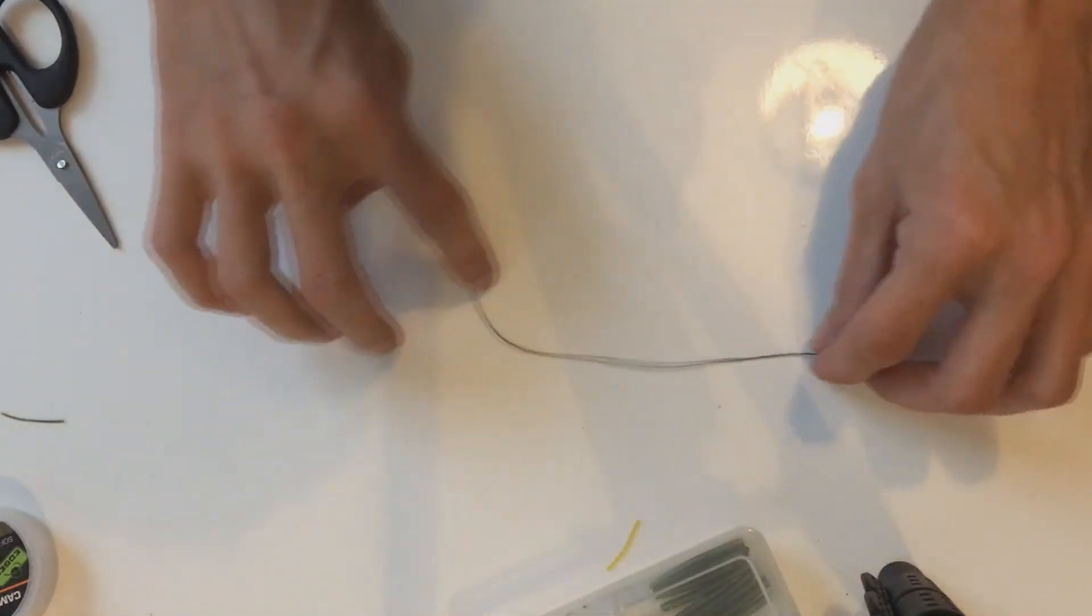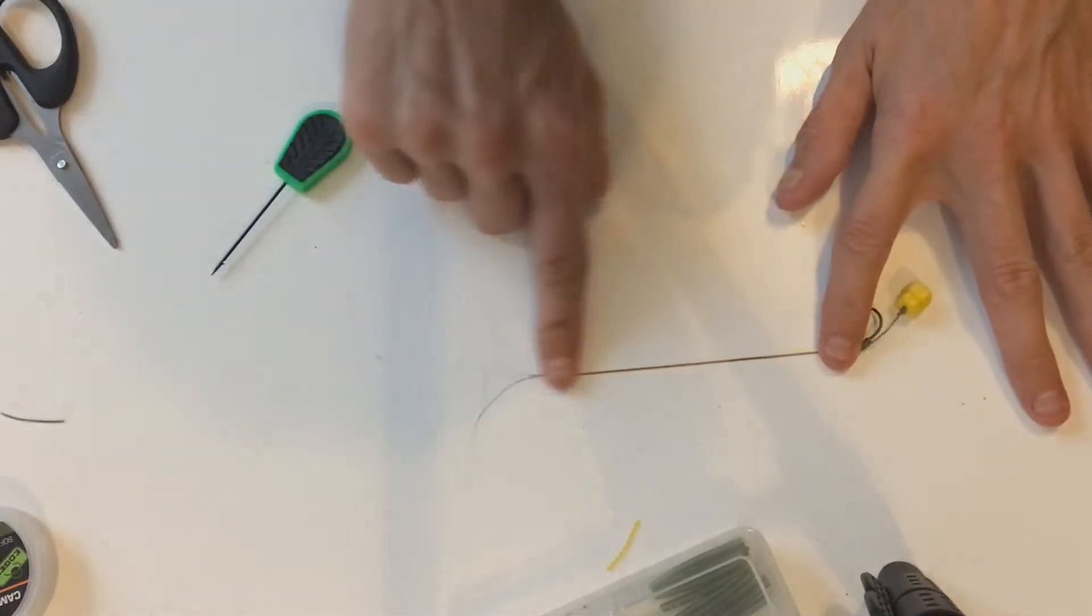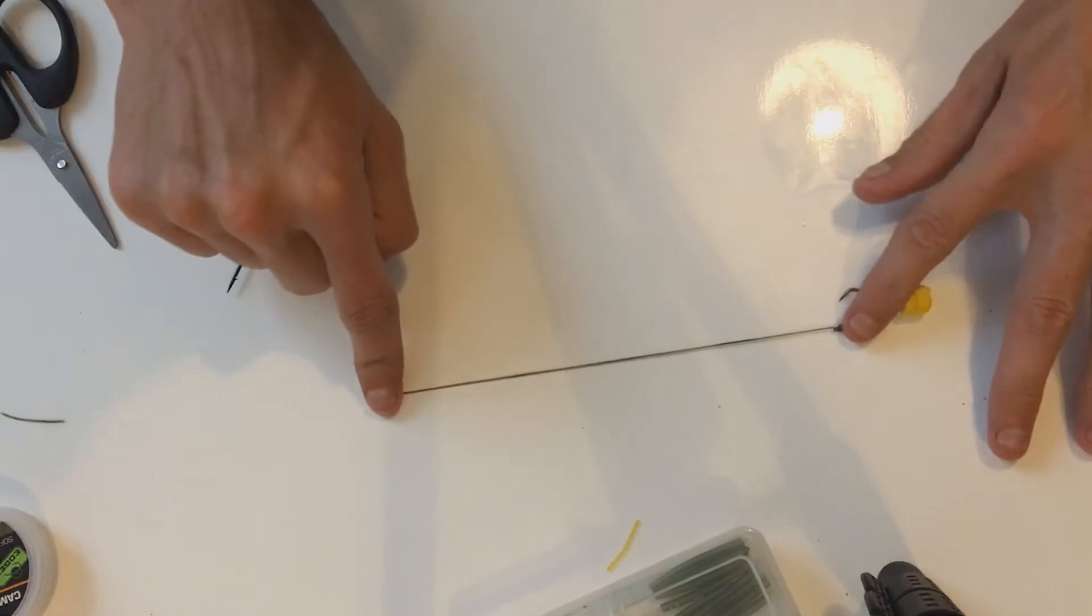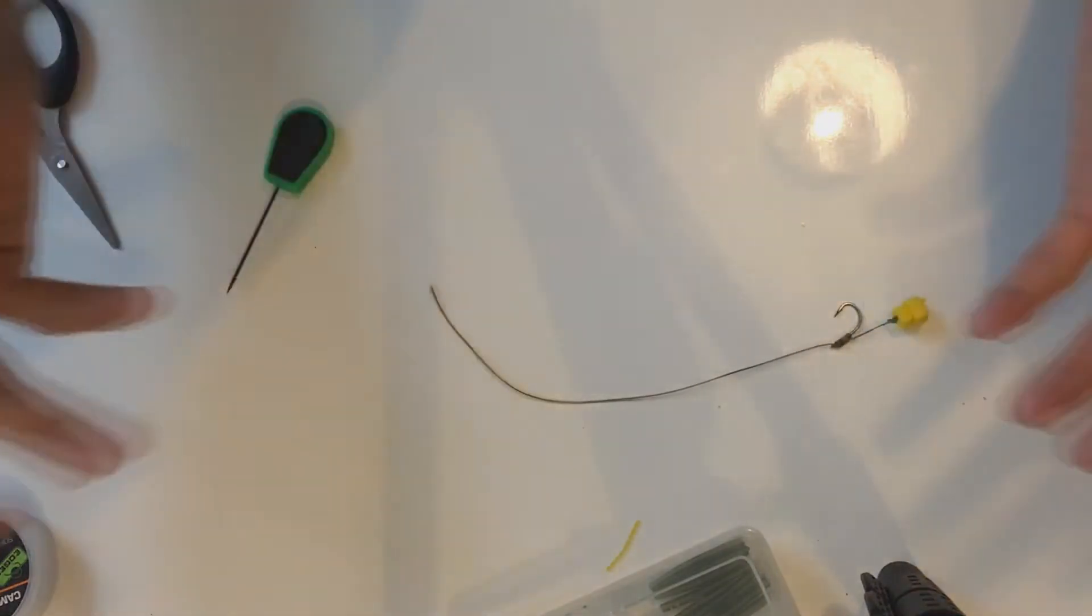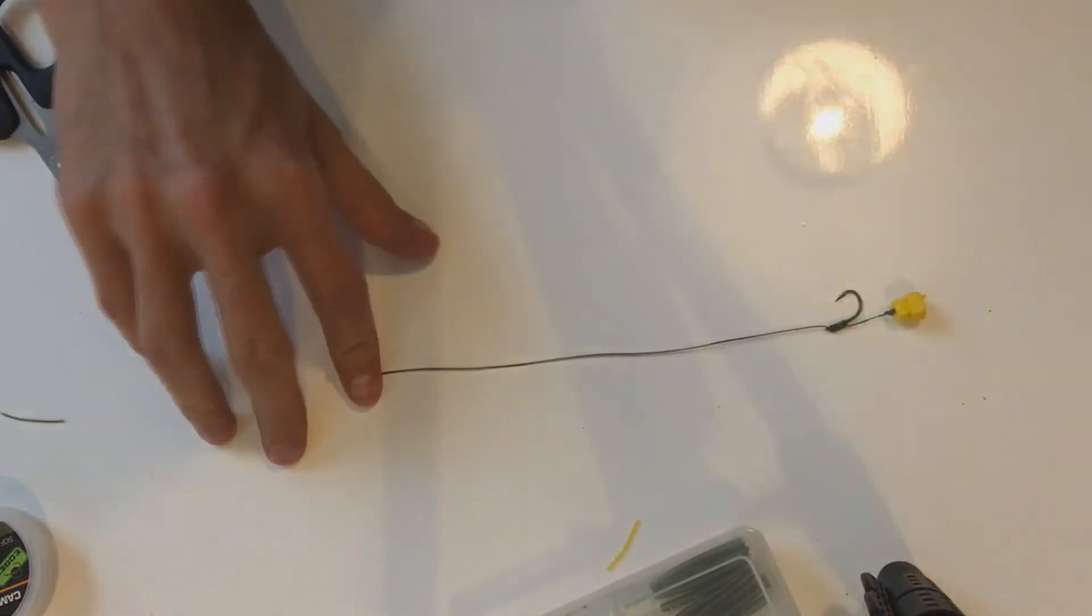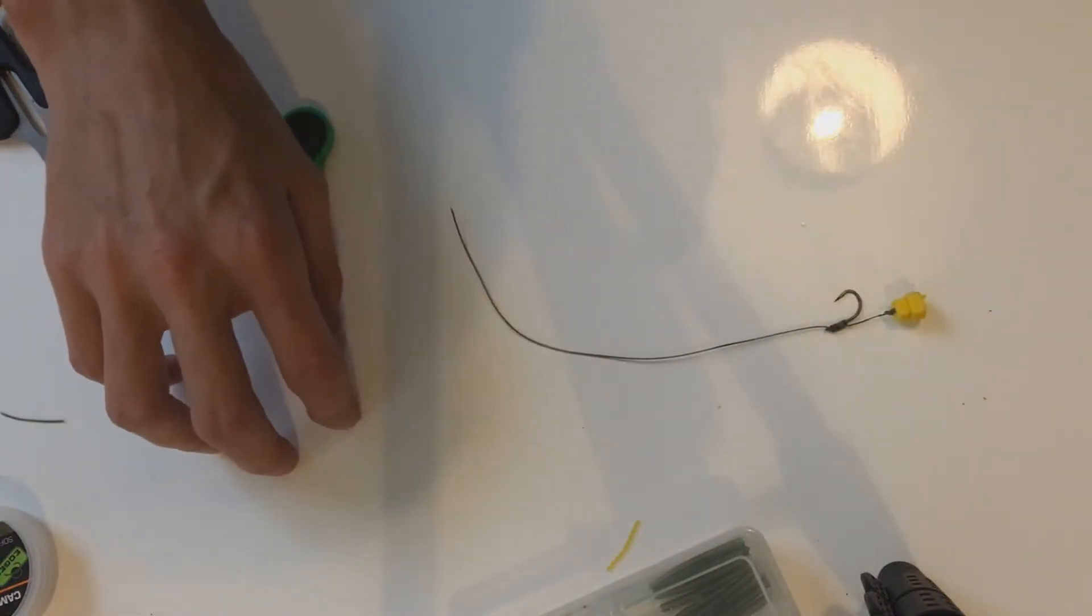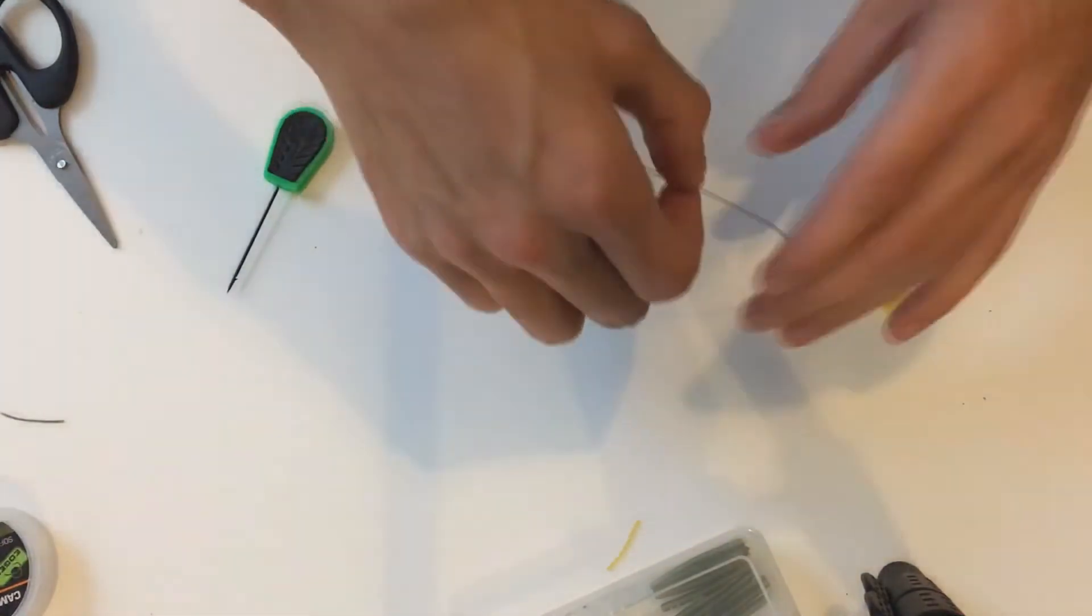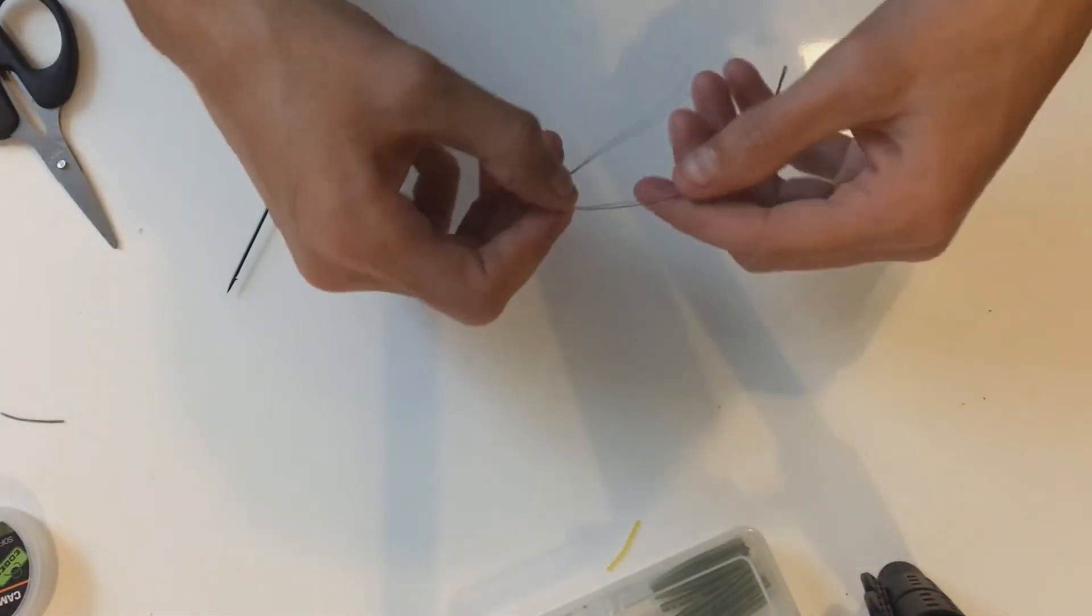But you can use this rig just as is if you wanted to. What I would do is I would make the hook link maybe 10 to 12 inches, 8 to 12 inches, it's entirely up to you and what works where you're fishing. So yeah, like I say I'm going to do mine as a PVA bag.